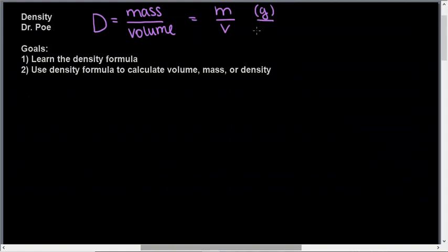The unit for volume is the milliliter or centimeter cubed. So the units here are always going to be grams per milliliter or grams per cubic centimeter, because one milliliter equals one cubic centimeter.